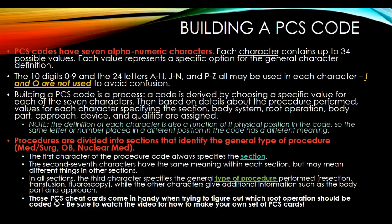PCS codes have seven alphanumeric characters. That means that each character can contain up to 34 possible values, and those values are either a number or a letter. Each of those values then represents a specific option for the general character definition.